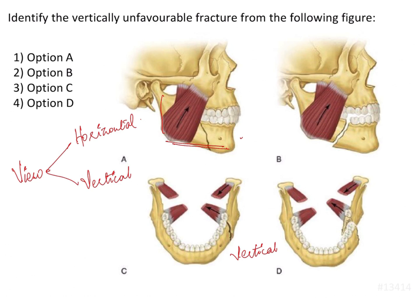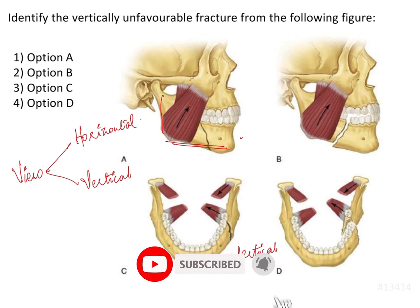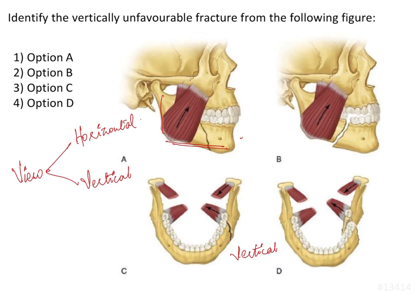When we say what is a favorable or unfavorable fracture — if the fracture is able to reduce itself, that is, if it is a self-reducing fracture, then it is called a favorable fracture. If it is not able to do so, it becomes an unfavorable fracture. Horizontal can be favorable or unfavorable, and vertical also can be favorable or unfavorable.